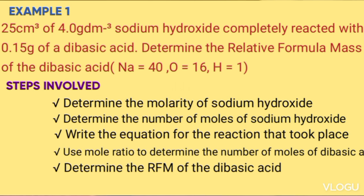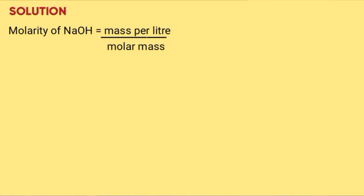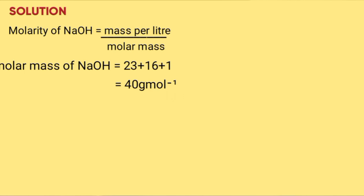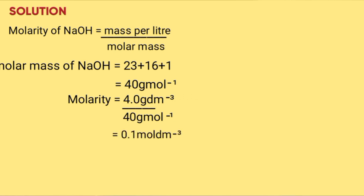The last step is to determine the RFM of the acid by taking mass in grams (0.15) divided by the number of moles from the previous step. Solution: molarity of sodium hydroxide equals mass per liter divided by molar mass. Molar mass of sodium hydroxide is 23 + 16 + 1 = 40 g/mol. So 4.0 g/dm³ divided by 40 g/mol equals 0.1 mol/dm³, which is 0.1 molar.